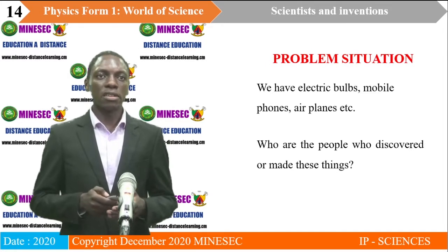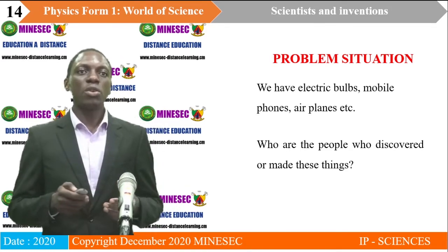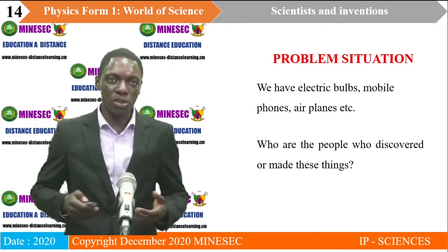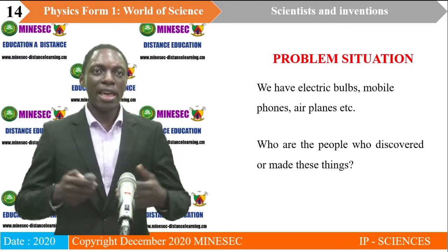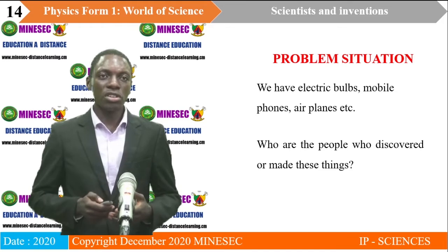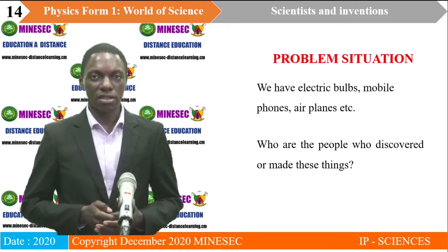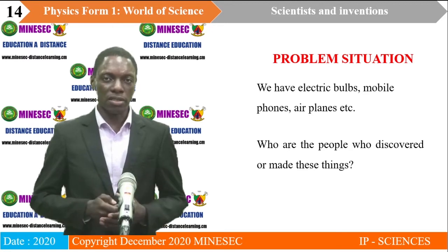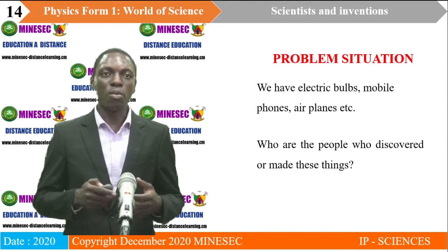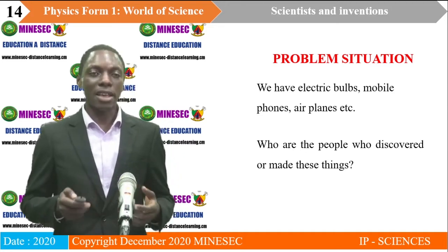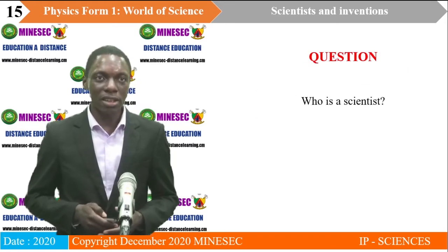We will now look at a problem situation. We all know that we have electric bulbs that we use in our homes, there are mobile phones, there are airplanes. So the question is: who are the people who discovered or made these things? The one thing that all these people have in common is that they are scientists. So the question now is: who is a scientist?